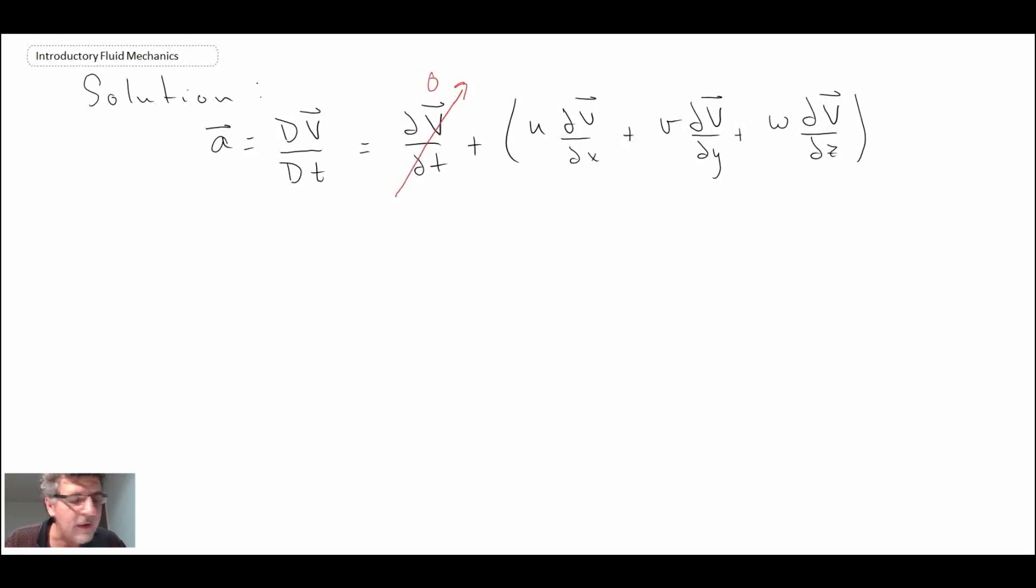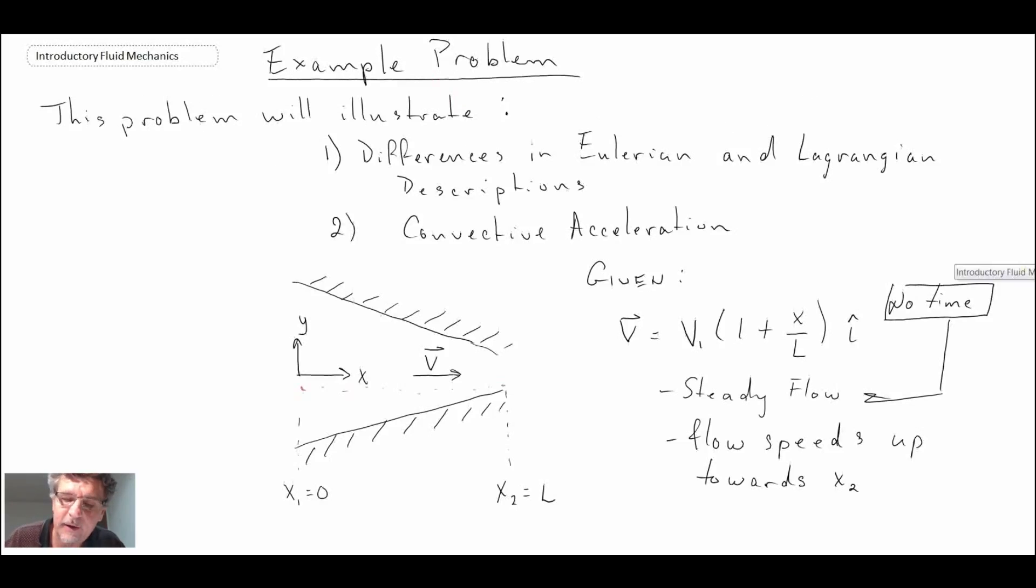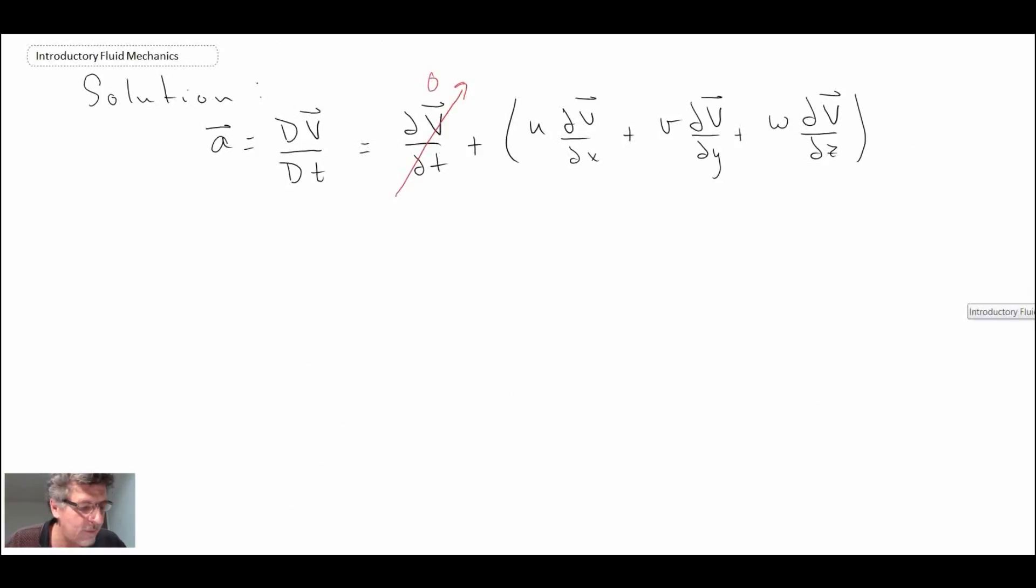The other thing that we can say: if we look back at our schematic, the velocity is only moving in the x direction. There is no velocity in the y or in the z direction, and consequently v equals zero and w equals zero, and consequently that term and that term disappear.